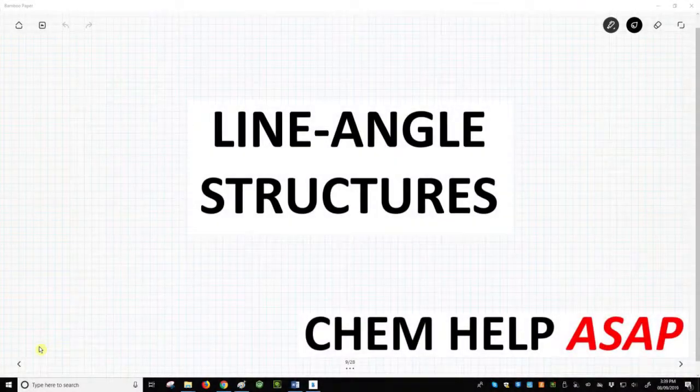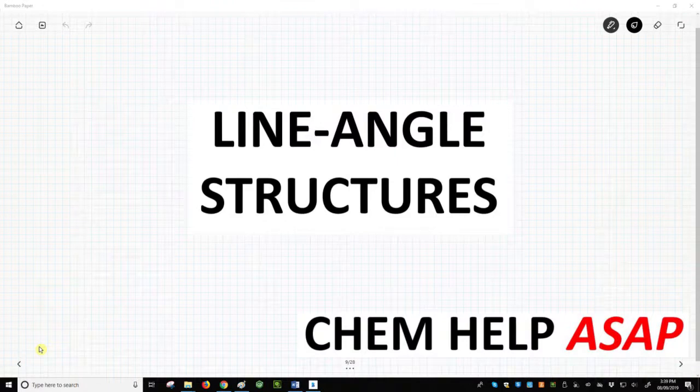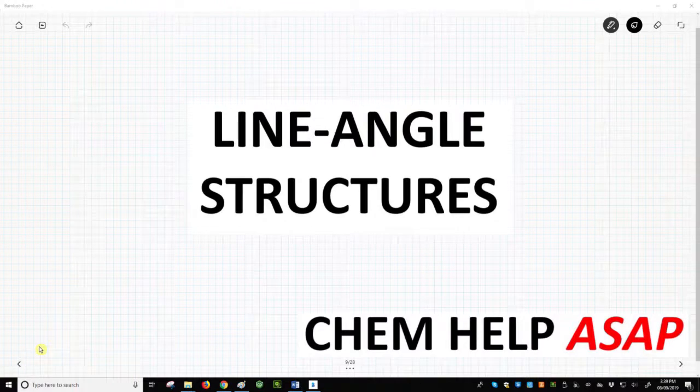Hello from Chem Help ASAP. We have learned about drawing Lewis dot structures. They are a great way to visualize a molecule's structure, but even fairly small molecules take some time to draw. Is there a quicker method?